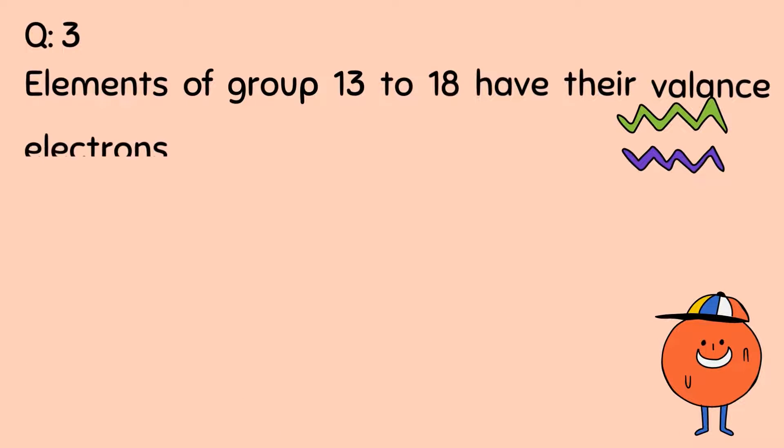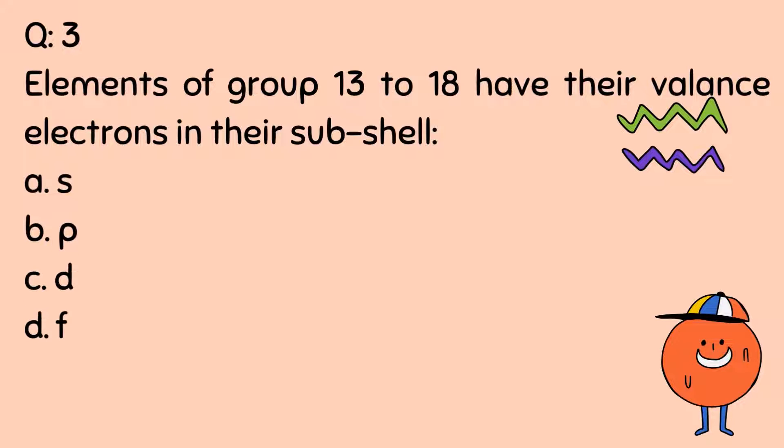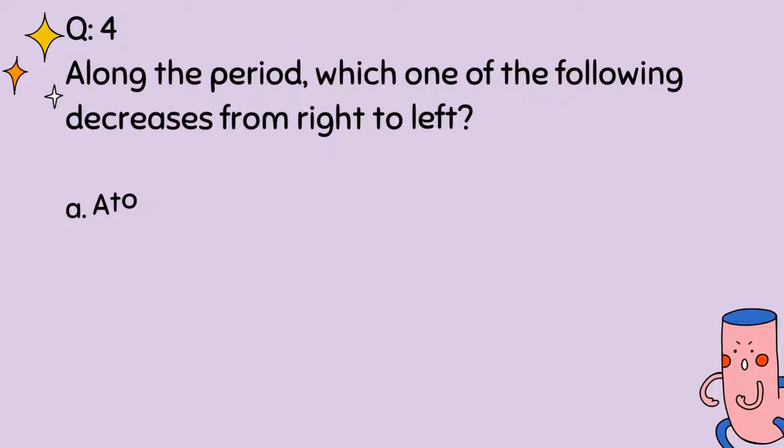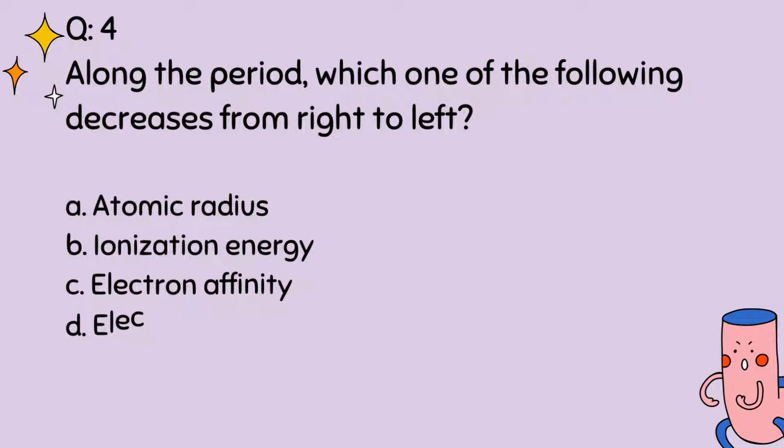Question number 3. Elements of group 13 to 18 have their valence electrons in their subshell: A, S, B, P, C, D, D, F. Correct option is B. Question number 4. Along the period, which one of the following decreases from right to left? A, Atomic radius, B, Ionization energy, C, Electron affinity, D, Electronegativity. Correct option is A.